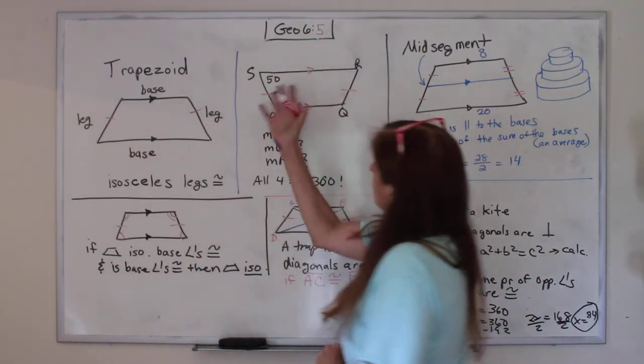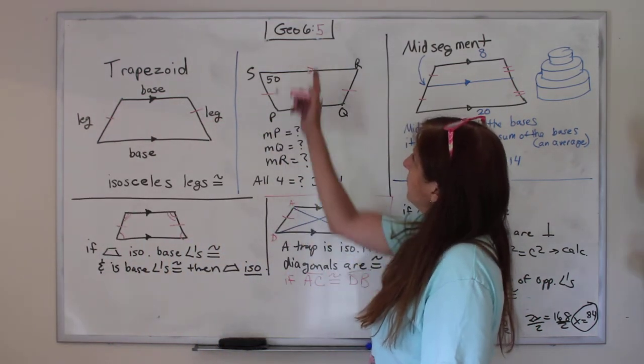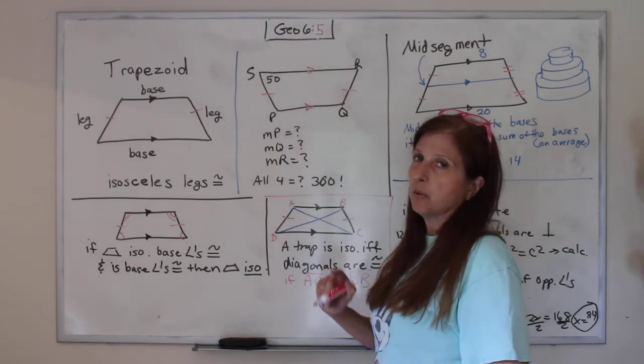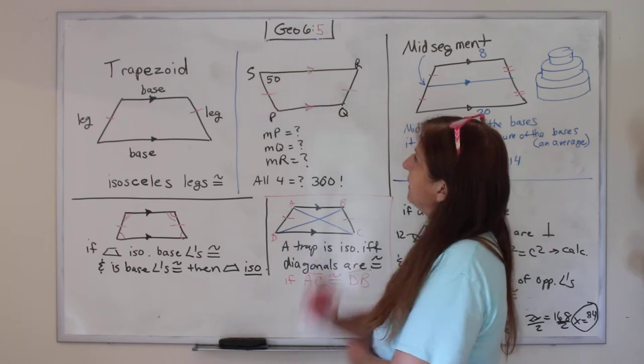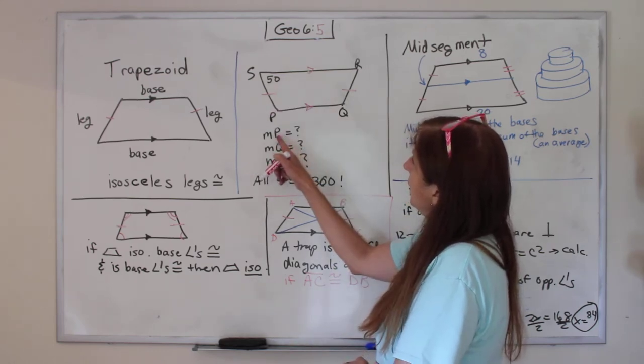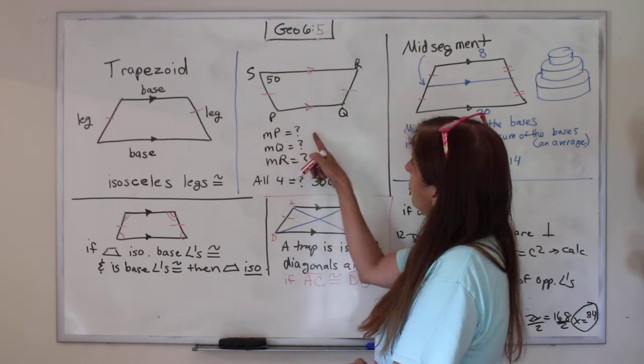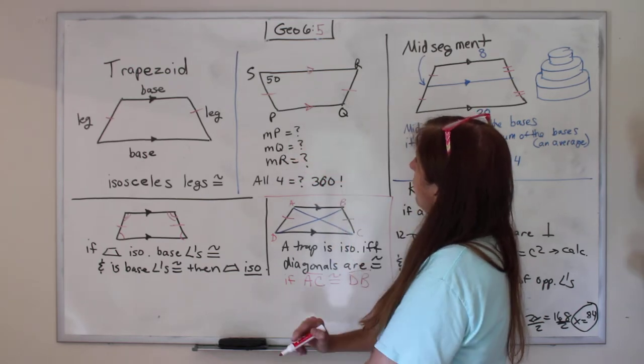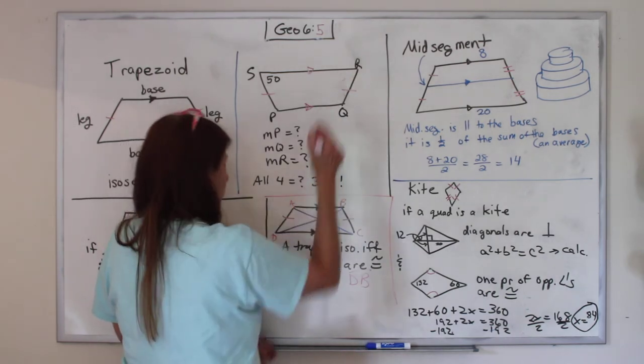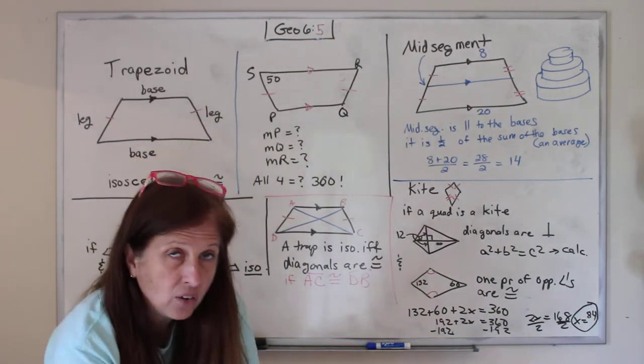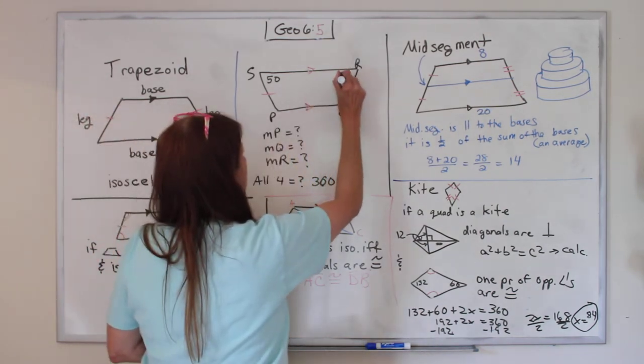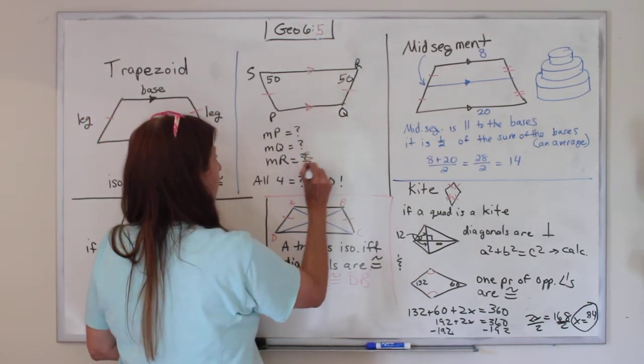All right, so here's a problem. We've got a trapezoid. We've got the parallel lines, and this one is isosceles. See how the marks are on there? The legs are the same. And we are given that that angle is 50. So what would be, we want to know what angle P is, Q, and R. Well, we can know R because it's also 50, because remember, the angles are the same. So R is 50.